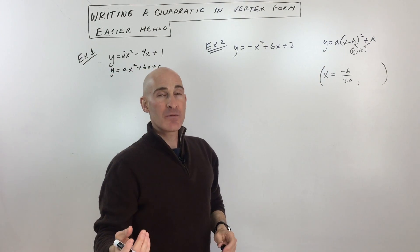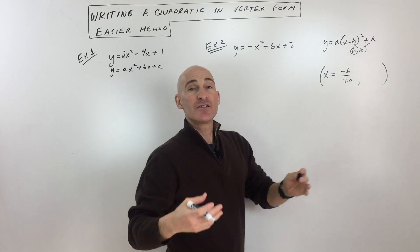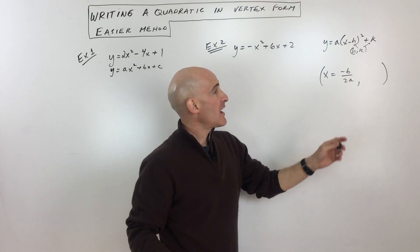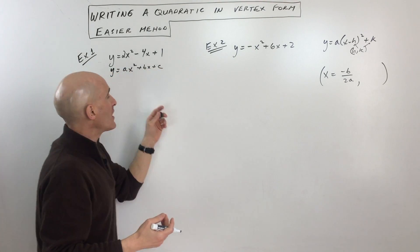Now, the easier method that I'm gonna show you here is that we're gonna use this formula, x equals negative b over two a, to find the x-coordinate of the vertex. And then what we're gonna do is we're gonna put it back into the equation to find the y-coordinate. So let's go ahead and do that.